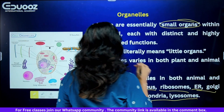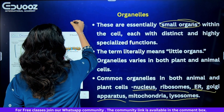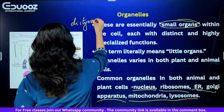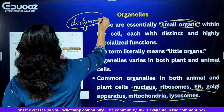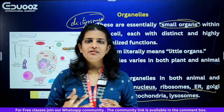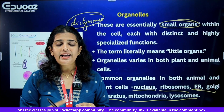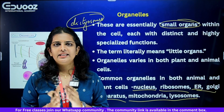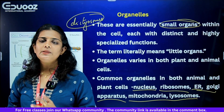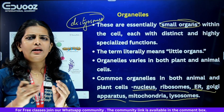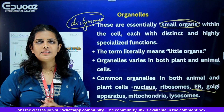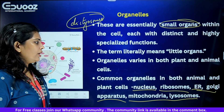In plant cells, the Golgi apparatus is known as Dictyosomes. Dictyosomes are also called Golgi bodies, and their function is the packaging and storing of substances. These are the common organelles shared between plant and animal cells.